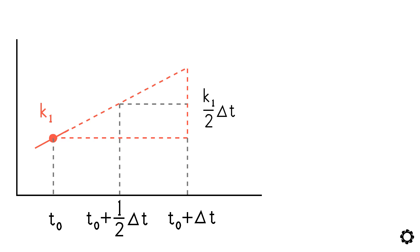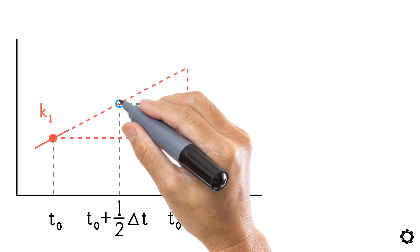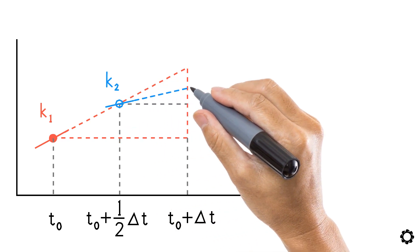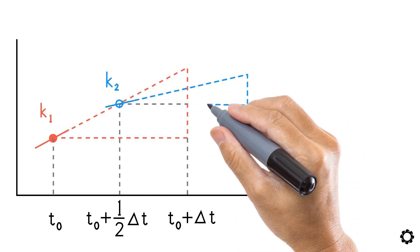Now that we have discovered where our second point is located, we can calculate the second slope, k2, which we'll use to create a second triangle by projecting the slope to the middle point of the second time interval.